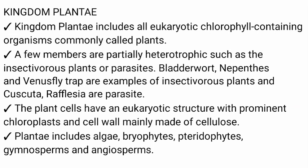Kingdom Plantae includes all eukaryotic chlorophyll-containing organisms commonly called plants. A few members are partially heterotrophic, such as insectivorous plants or parasites. Bladderwort, Nepenthes, and Venus flytrap are examples of insectivorous plants, and Cuscuta and Rafflesia are parasitic plants. Plant cells have an eukaryotic structure with prominent chloroplasts and cell walls mainly made up of cellulose.